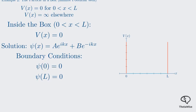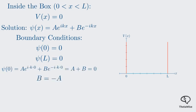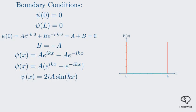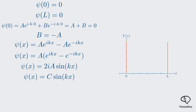Let's apply them. For the first condition, ψ of 0 equals zero. Plugging in x=0, we get A plus B equals zero. This means B must be equal to negative A. So, B equals -A. This simplifies our general solution inside the box. It becomes A times the quantity e^(ikx) minus e^(-ikx). Using Euler's formula, this is just 2iA times sine of kx. We can absorb the constants into a new constant C to get a cleaner expression. So, our wave function inside the box must be of the form C times sine of kx.